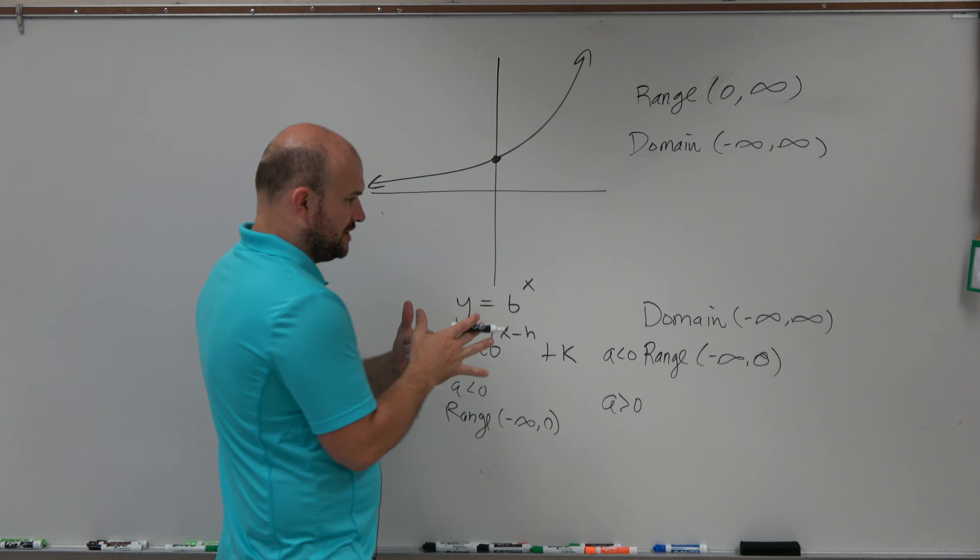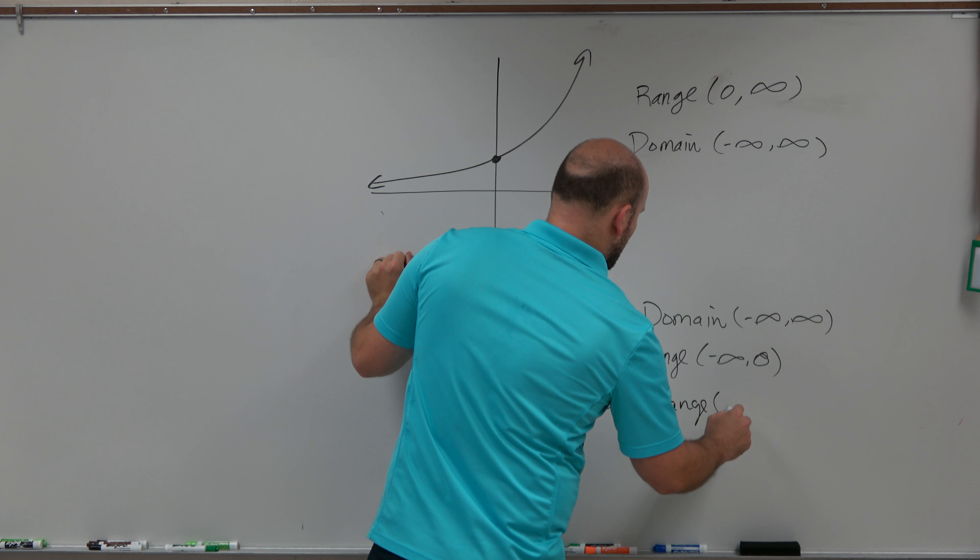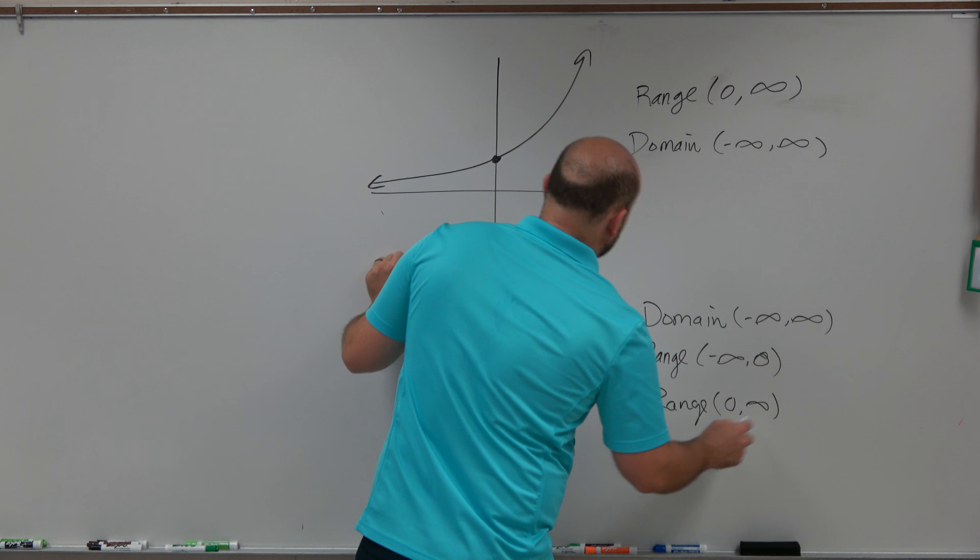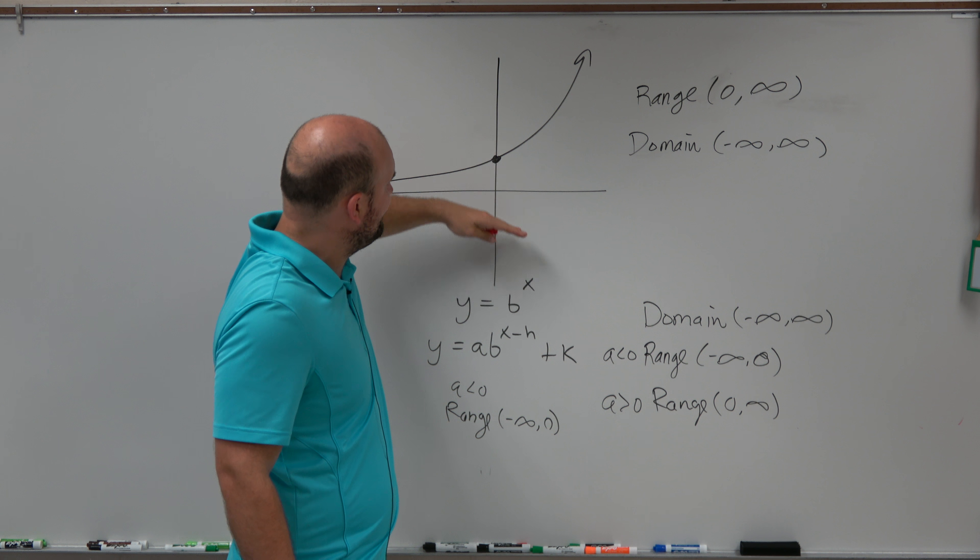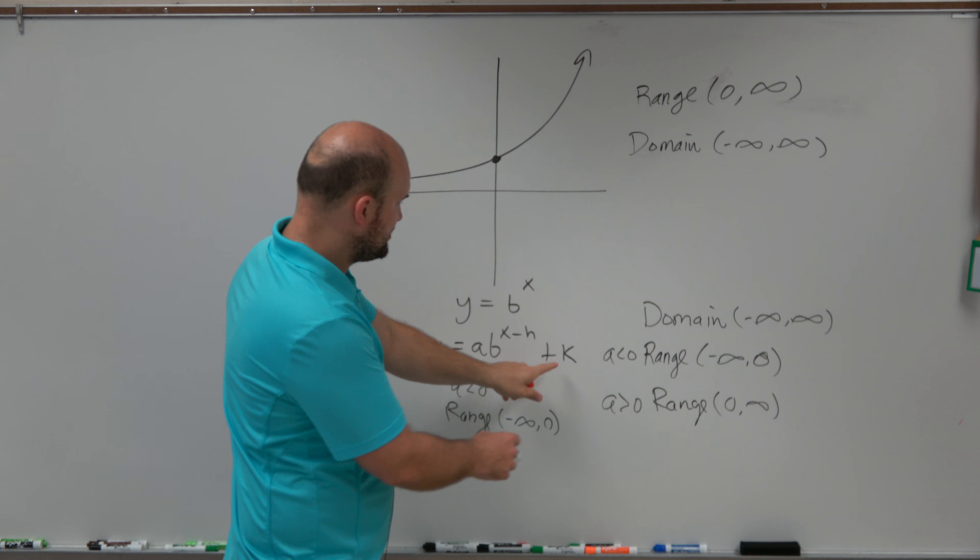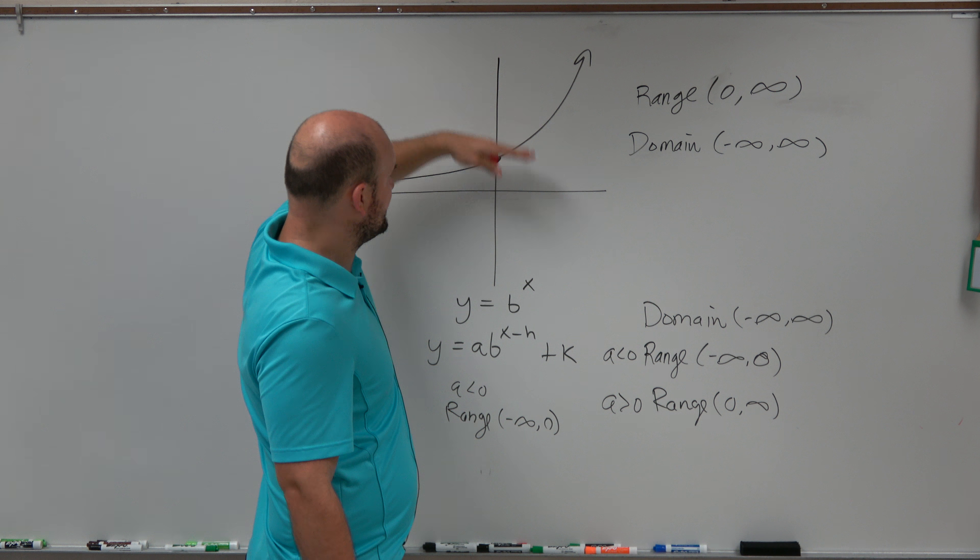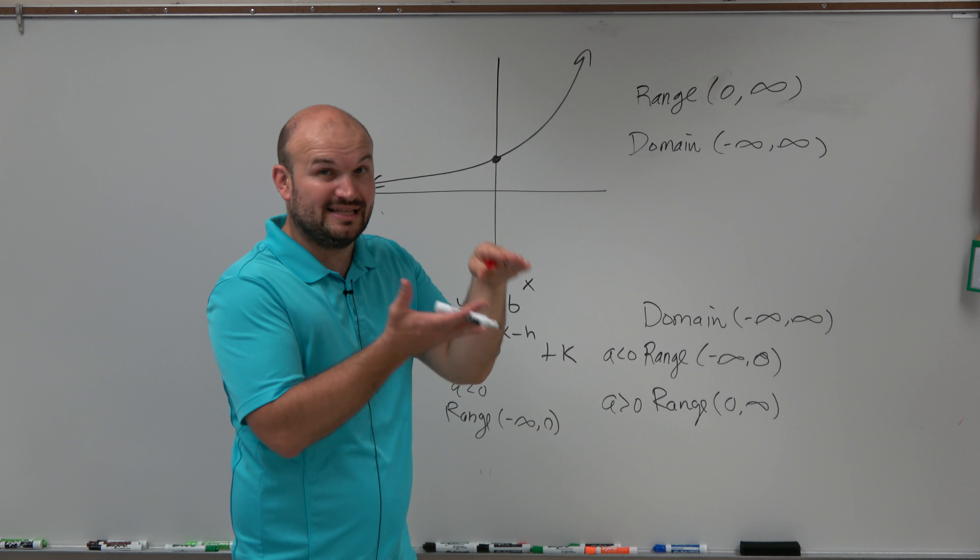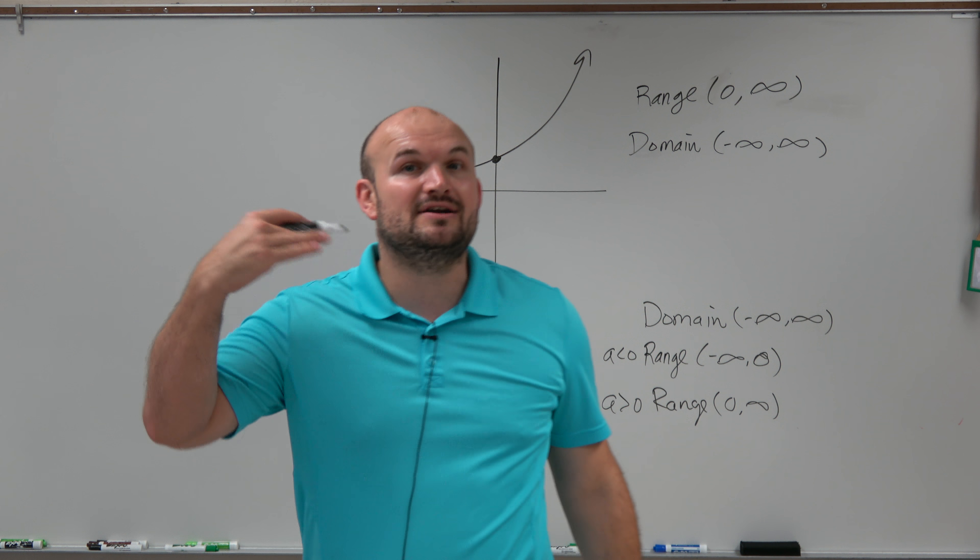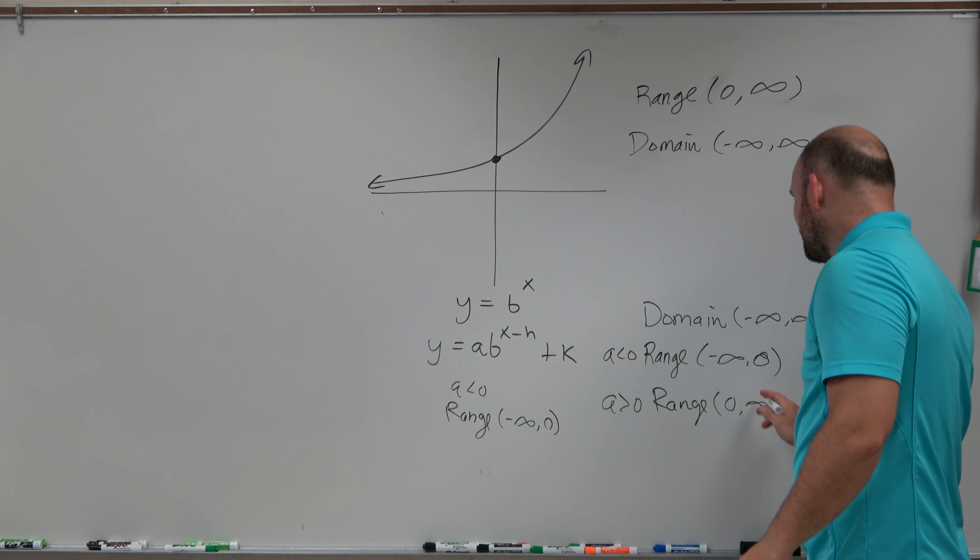When a is greater than 0, the range is 0 to infinity. But now what would happen if, right now we have a horizontal asymptote at 0. If I shift this graph up 1 by k, basically what that means is now the whole graph goes up 1, including the asymptote. That means the graph is never going to approach 1. So if a is greater than 0, my range is 0 to infinity.